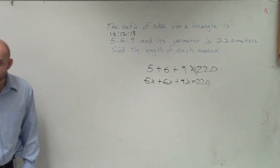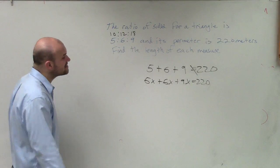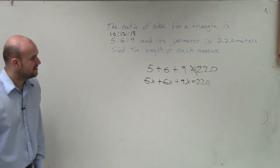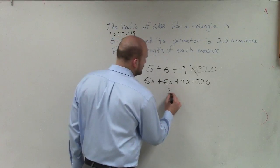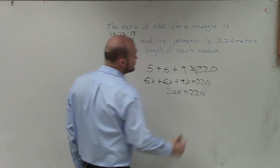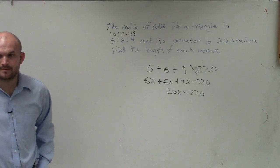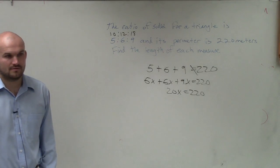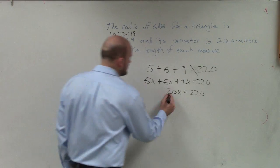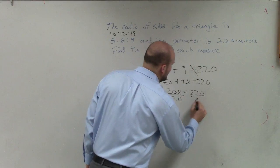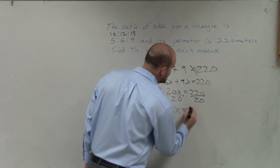Now, I can go and solve this, and I can say 5x plus 6x plus 9x, so that equals 20x equals 220. Then, divided by 20, divided by 20, x equals 11. Would you guys agree with that?